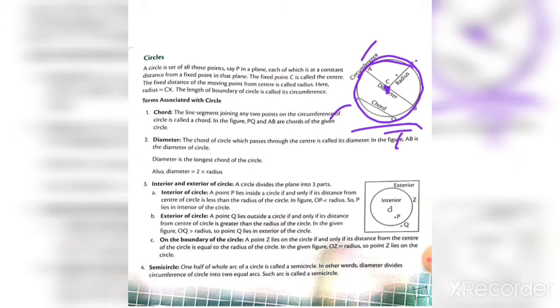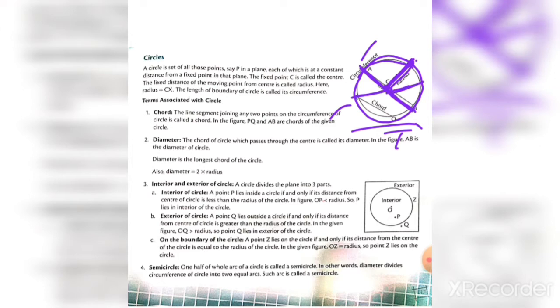This fixed point is called the center. The distance from the fixed point to any point on this boundary is called the radius. This is radius, this one also radius, this one also radius. We can get many radii here with respect to this center.